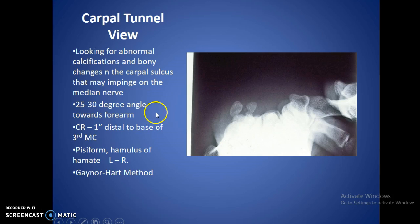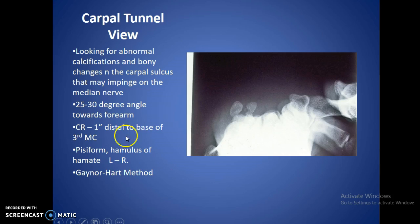The carpal tunnel view is used to look for abnormal calcifications, sometimes within the sulcus going across there. You can see the hamate, the hamulus of the hamate, and the pisiform — it's an excellent view if the doctor wants to see those two bones better. Basically, you put your forearm flat down with your hand back, flex your fingers so they're pointing up at the ceiling, and put a 25 to 30 degree angle going toward the forearm, with the CR at the distal base of the third metacarpal. This is also called the Gaynor-Hart method.